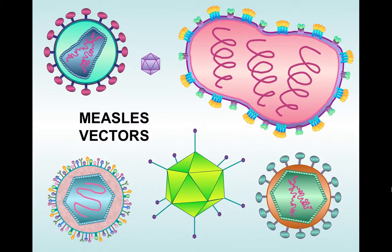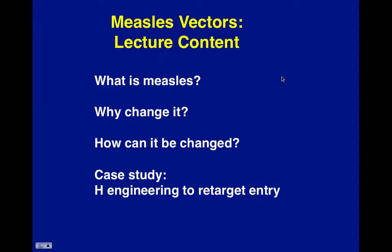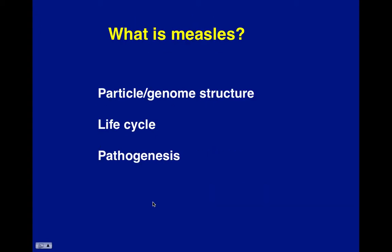This is Alex Generous from KREB Radio, and today I'm going to be talking about measles vectors. In the top right-hand corner you'll see a nice picture of measles virus. These are some other viruses that are used as vectors, but today's focus is measles vector. Basic ideas: what is measles, why did we change it, how can it be changed, and then a case study in hemagglutinin engineering to retarget entry into a specific cell type.